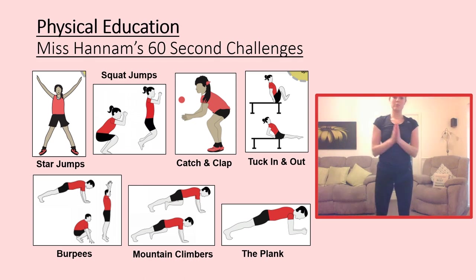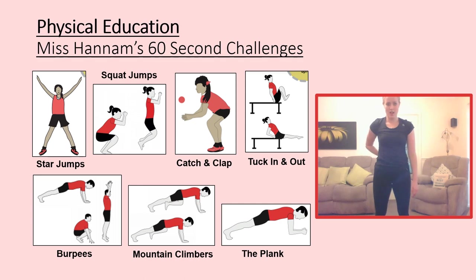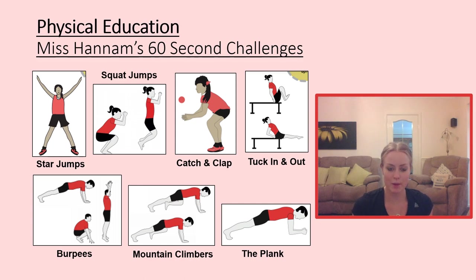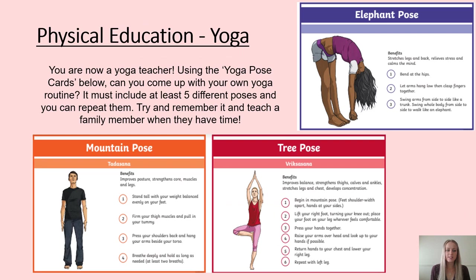Squat jumps: bending down, swinging back, and jumping up as high as you can — we should be good at these because it's like our standing long jump exercise. Good luck with all the exercises — I'm sure you'll do fab; make sure to record them in the table. To end our PE session today, you are going to be a yoga teacher: use the yoga pose cards on the following slides to come up with your own yoga routine. It must include at least five different poses, you can repeat them as many times as you like, and then try to teach a family member your yoga routine when they have time.